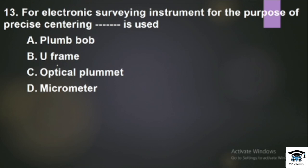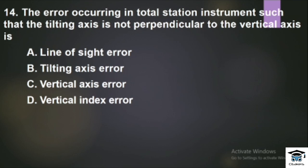Question: For an electronic surveying instrument, for the purpose of precise centering, what is used? For precise centering in total station, we use the optical or laser plummet to locate the vertical axis. In any case, the error due to the tilting axis being perpendicular to the vertical axis forms a tilting axis error.